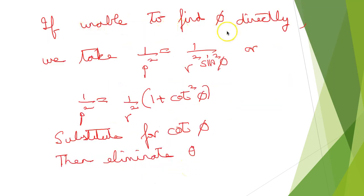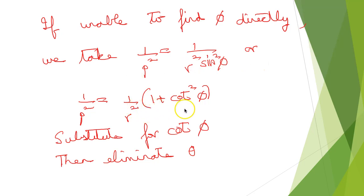If we are unable to find φ directly, we use 1/p² = (1/r²) csc²φ = (1/r²)(1 + cot²φ), substitute for cot φ, and then eliminate θ. We will see how to do a problem with this method.